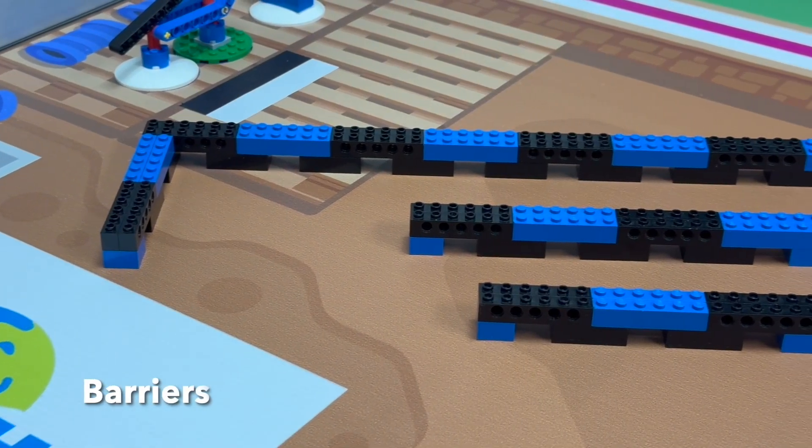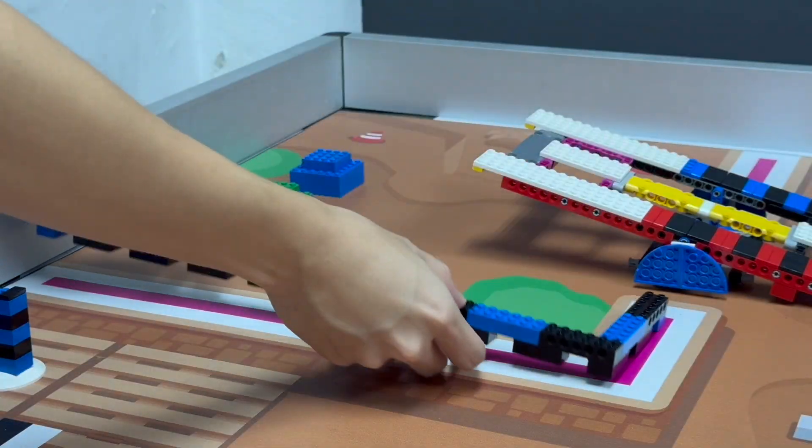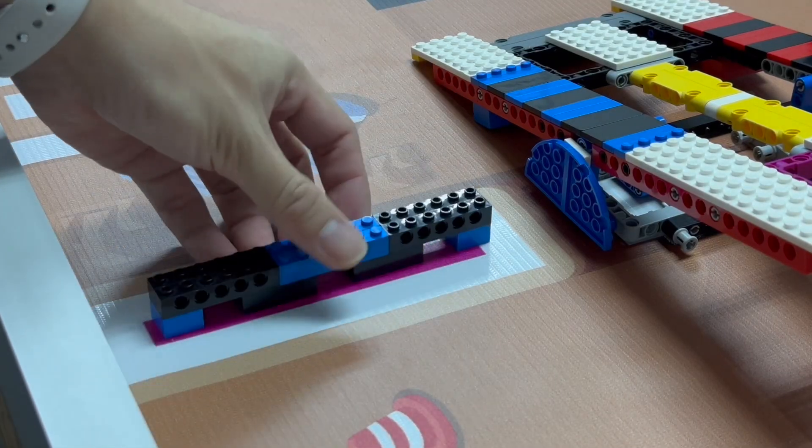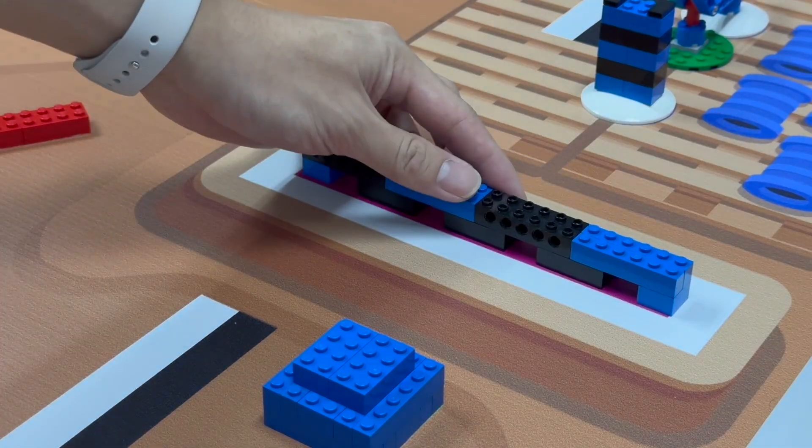There are three barriers on the game field: two surrounding the top left corner, and one on the right side of the game field.